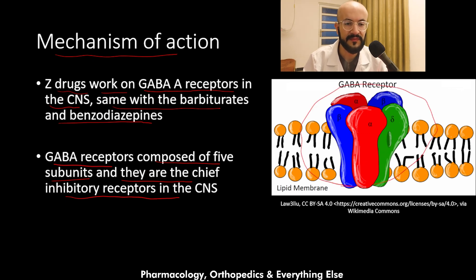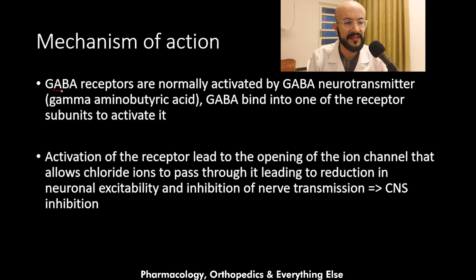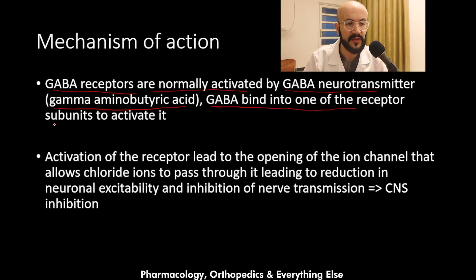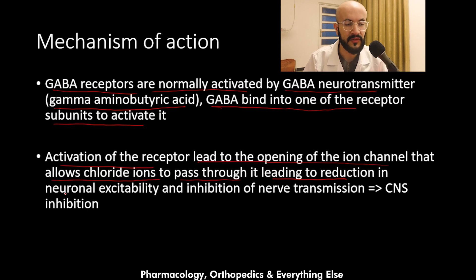Here is a picture of the GABA receptors. They are the chief inhibitory receptors in the CNS, opposite to the excitatory receptors like the NMDA receptors where glutamate works. The GABA receptors are normally activated by the GABA neurotransmitter — gamma-aminobutyric acid — which binds to one of the receptor subunits to activate it. Activation leads to the opening of the chloride ion channel, reducing neuronal excitability and inhibiting nerve transmission, leading to CNS inhibition.